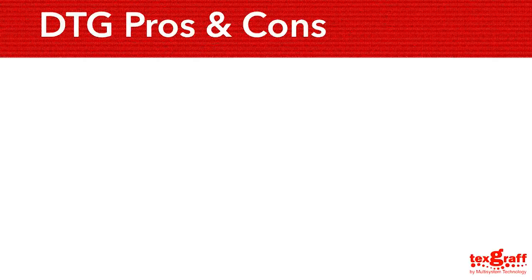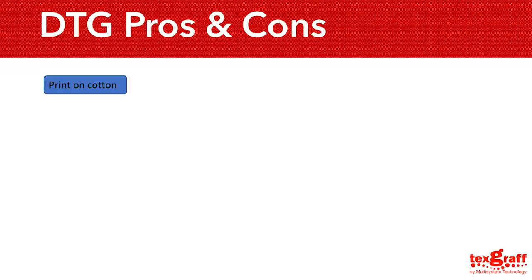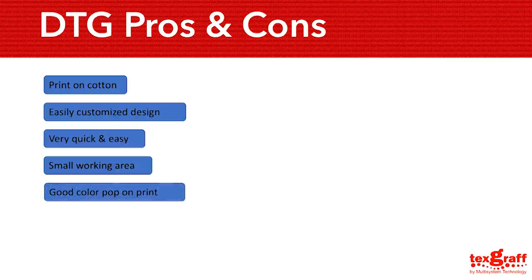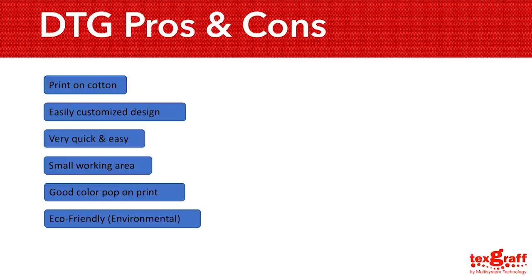Now let's discuss the pros and cons of DTG printing. First pro: print on cotton — everyone likes to wear cotton because it is comfortable and smooth, unlike sublimation which is not ideal for cotton. Second, the DTG method is simple — you can print any sort of artwork or design you prefer on a shirt. Third and fourth, it is quick and easy with a small working area — in a few clicks your designs are printed in a small space; the DTG printer doesn't take up much working space. Fifth, good color pop on print — you can see colors immediately after printing, unlike sublimation where colors appear pale on the transfer paper until sublimated. Lastly, the inks used by DTG are eco-friendly, produce no waste, and some machines and inks come with green certificates.